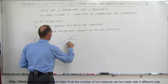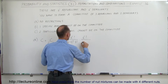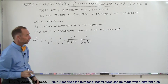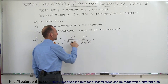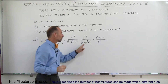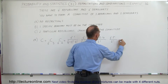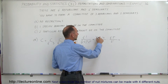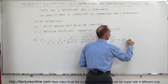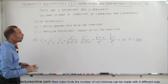This becomes 6! divided by (6−3)! × 3! multiplied by 6! divided by (6−2)! × 2!. So 6!/3! gives us 6×5×4 divided by 3! in the denominator. For the second part, 6!/4! gives us 6×5 divided by 2!. Since 3! equals 6, it cancels, leaving 20. Then 2! divides into 6×5 giving 15. So a total of 300 different combinations.